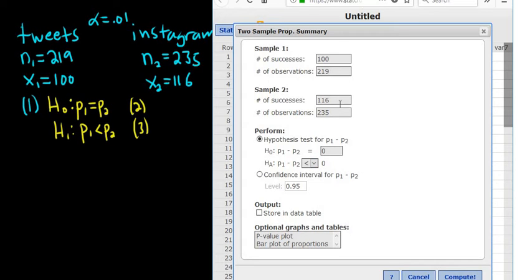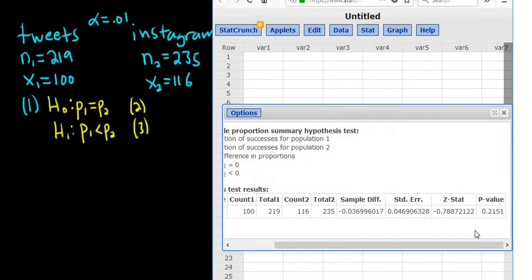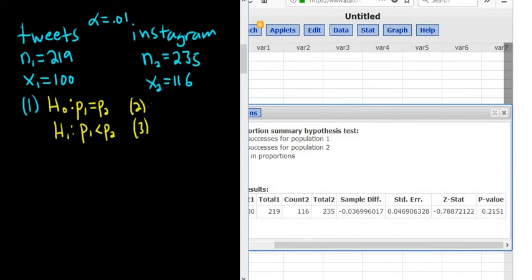100, 219, 116, 235. Good stuff. Click Compute. All right. So step two is the test statistic. So it says Z-stat. So whenever you see Z-stat, just write Z. So Z equals negative 0.79. And the p-value, the p-value in this case, is 0.2151.